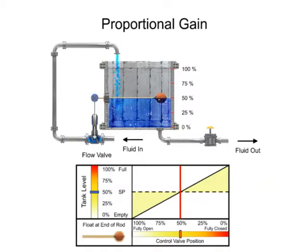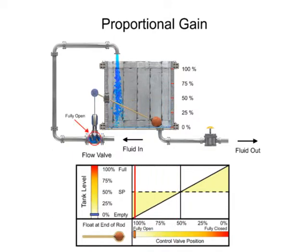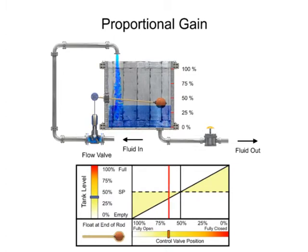The float on the end of the rod is positioned to meet the minimum and maximum flow capability of the valve. The valve is actuated by the float to a fully open position when the tank level is low and fully closed when the tank level is full.